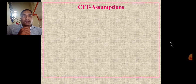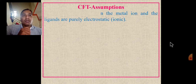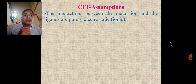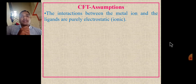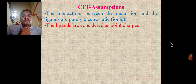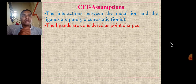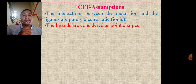The assumptions of Crystal Field Theory are very important. The first assumption is that the interaction between the metal ion and the ligand is purely electrostatic — that is, ionic. The second important assumption is that the ligands are considered as point charges.